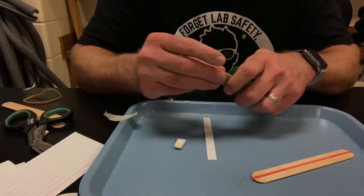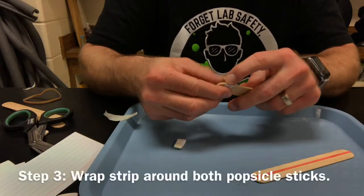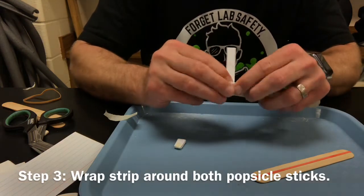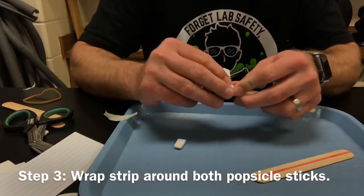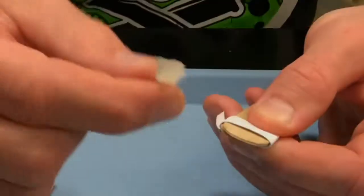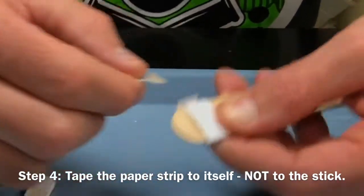With the empty two, gonna pick up my strip here and I'm just gonna wrap it around. And now when I tape this closed, I do not want the tape on the stick. I want the tape on the paper like that.